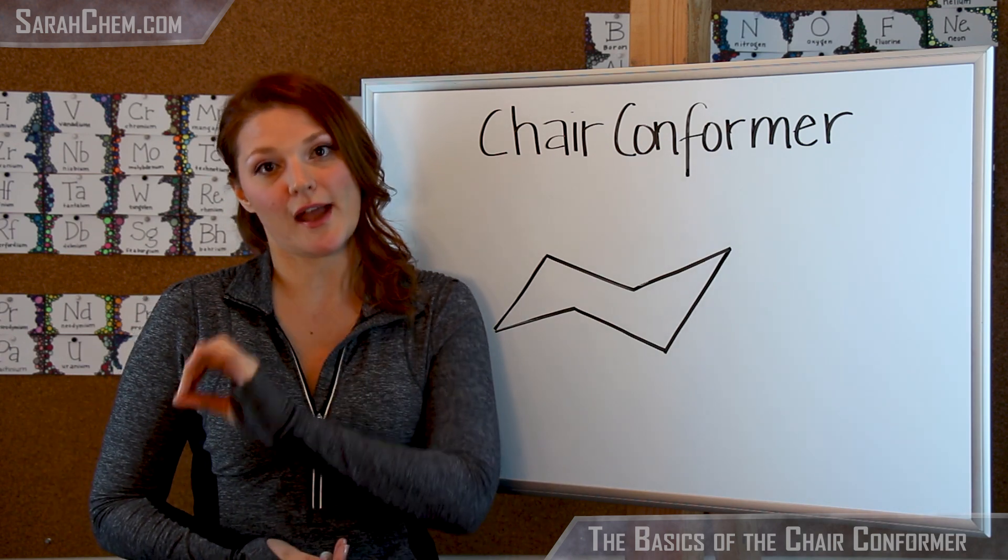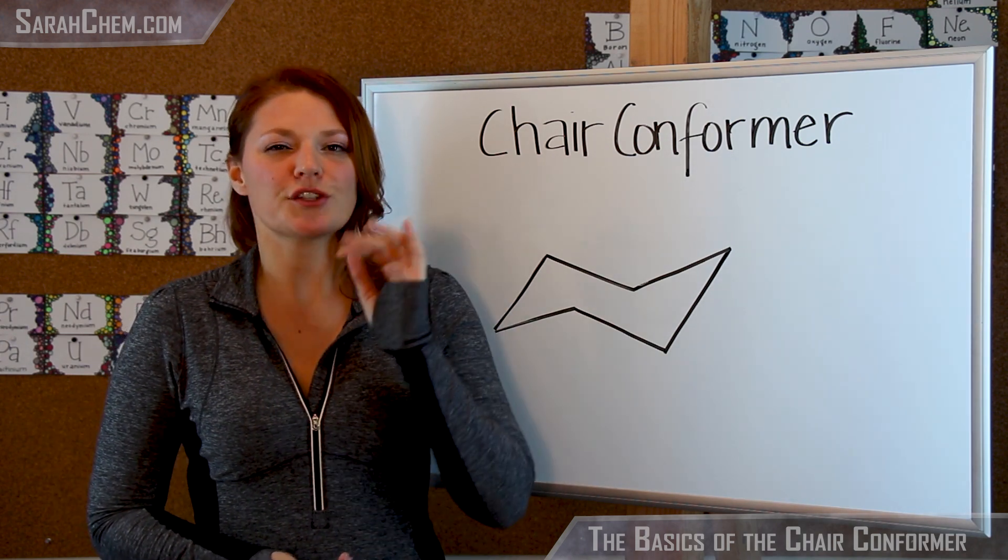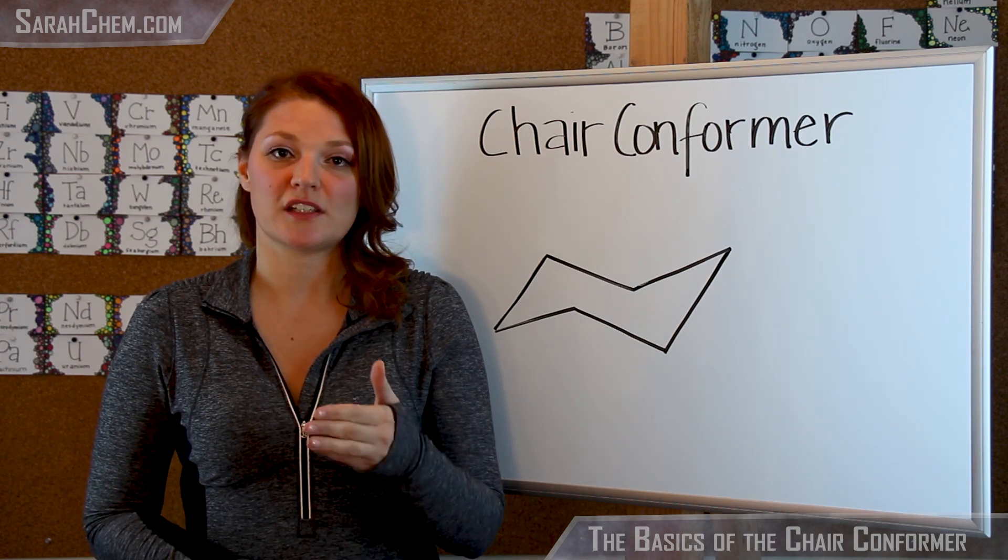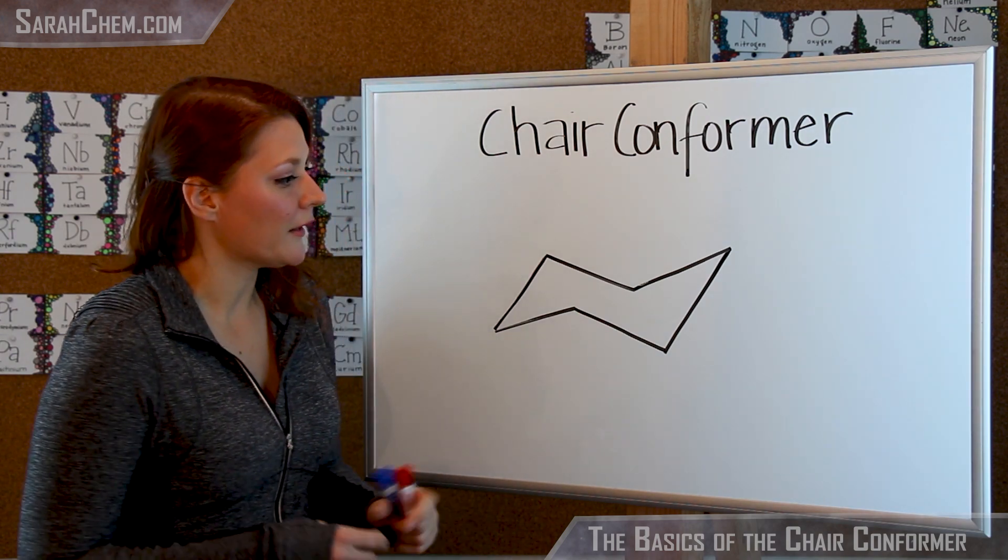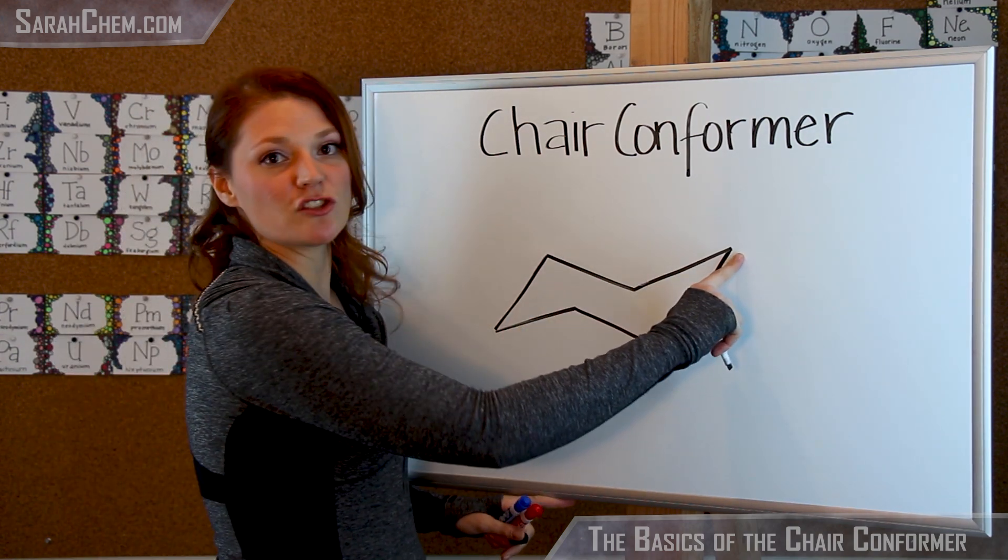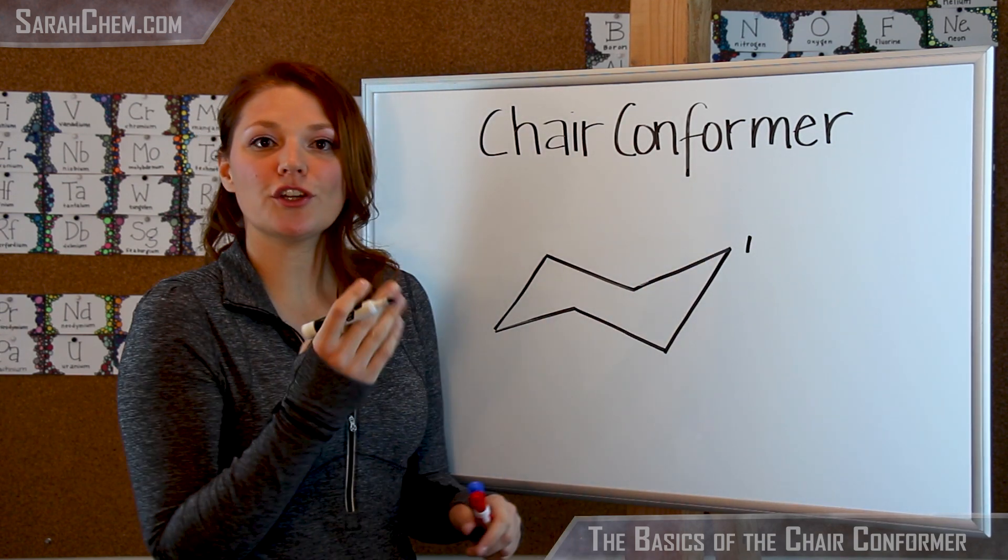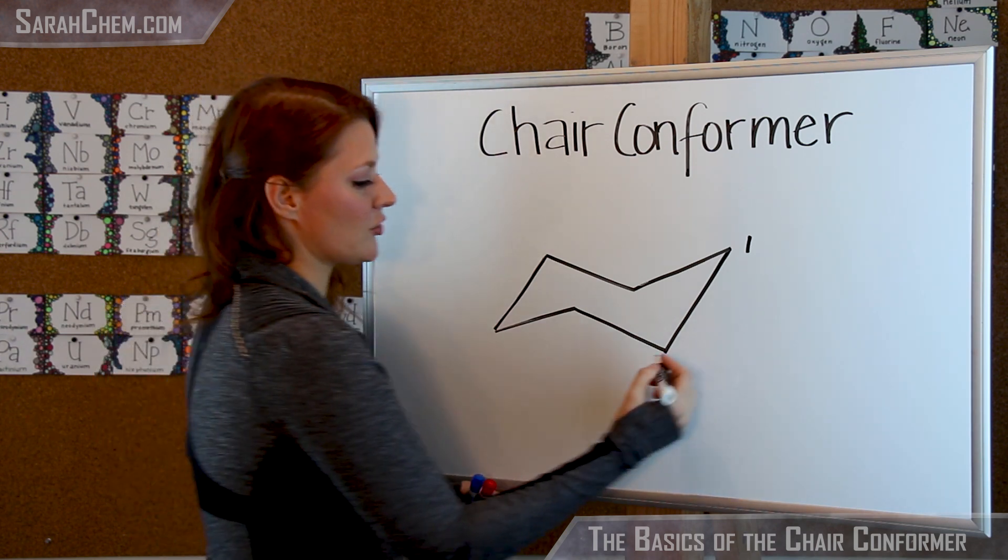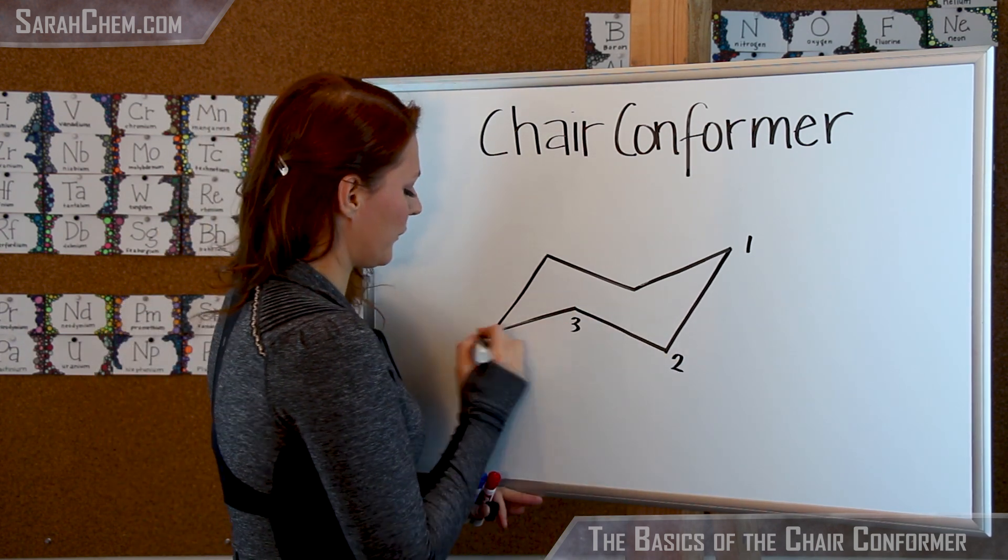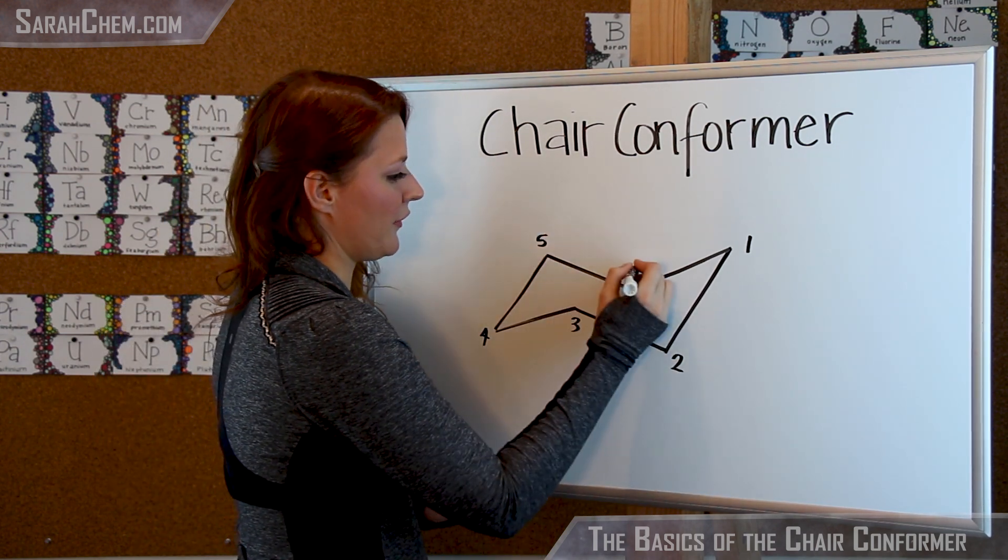You can't just randomly draw them any way you want. There's a very specific way, either axial or equatorial. So now before we get into the details of those positions, let's first number our ring. So over here, by convention, you start at the carbon at the top here, and I call that carbon one. And then you're going to move around in a clockwise fashion. So I'd have carbon two, three, four, five, and six.